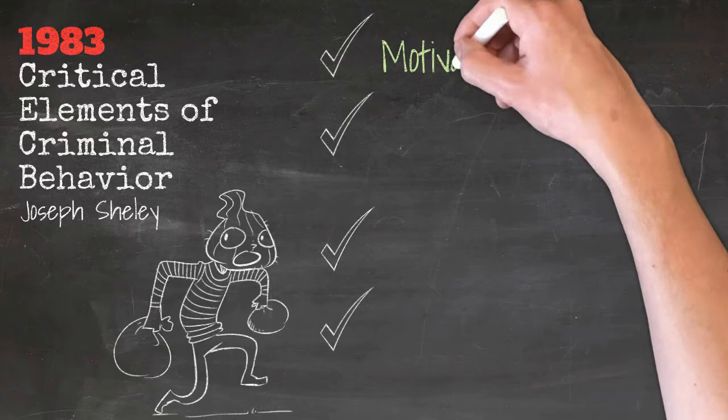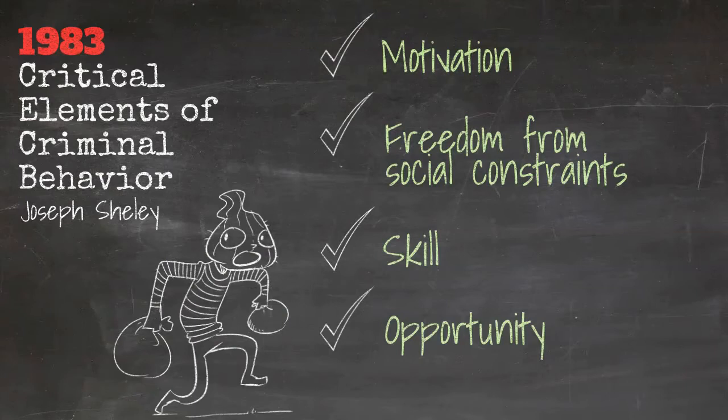One, the offender must be motivated. Two, they have to feel free from social constraints. Three, they must have the skill or the technical ability to commit the crime. And four, they have to be presented with the opportunity or the chance to do so.